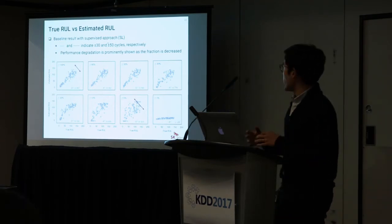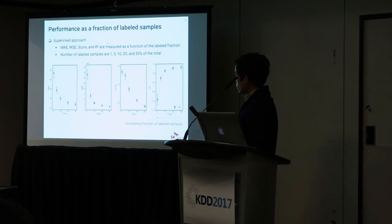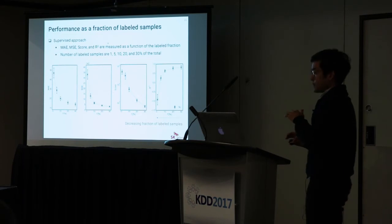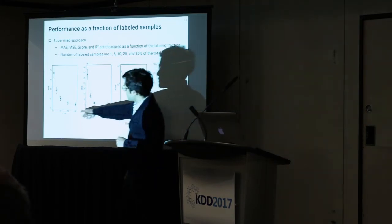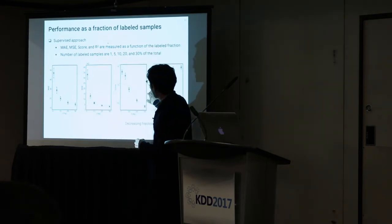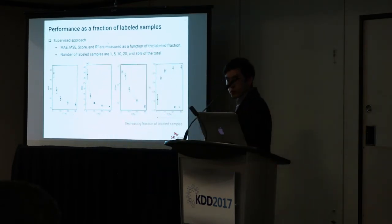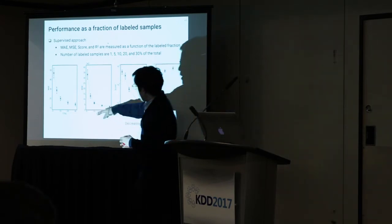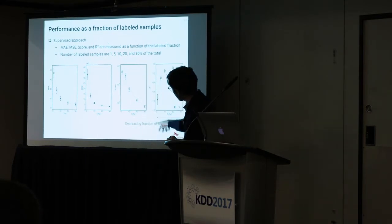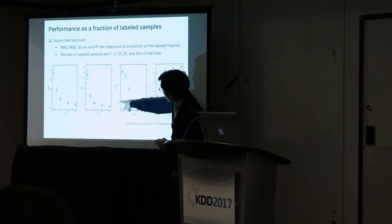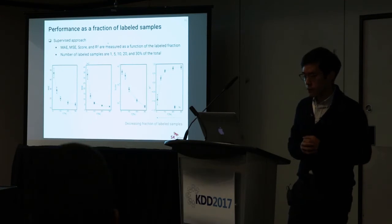To quantify the results, we repeated this process many times and measured MAE, MSE, R-squared, and the score metric given in the C-MAPS paper. Except for R-squared, lower values mean better performance. The y-axis shows each respective metric as a function of failure fraction in the range of 0 to 30%, where degradation is most prominent. As the failure fraction decreases, performance gets progressively worse — the score metric plotted on a log scale shows prediction power decreases almost exponentially.